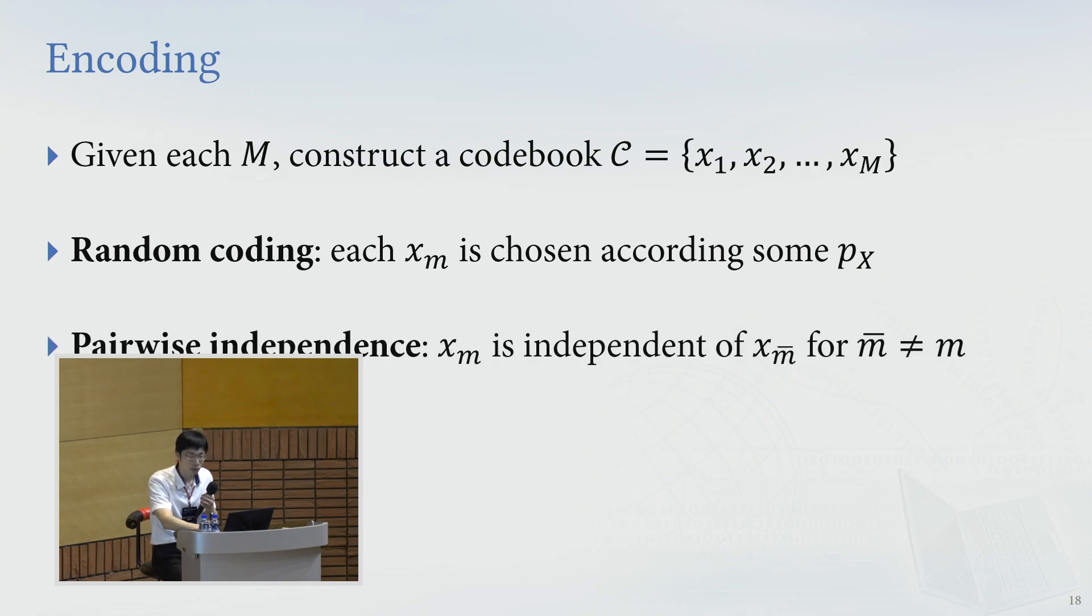And for the random coding, we will use a pairwise independent code book, meaning that xm is independent of, it's chosen independent to any other code word. And at this moment, you can just think of we are using mutually independent code book, where all those random variables are mutually independent, but actually the proof works for pairwise independent code book, because that's more easy to implement in practice.